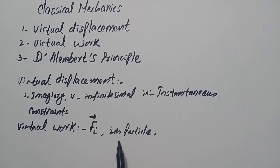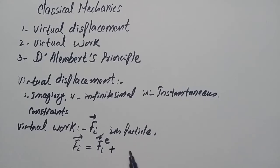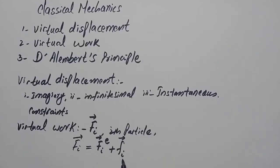This force acting on the i-th particle can be split into two components: F_i equals F_i external plus F_i due to constraints. F_i^e is the external force and F_i^c is the force due to constraints, since constraints restrict the motion and reduce the number of independent coordinates.